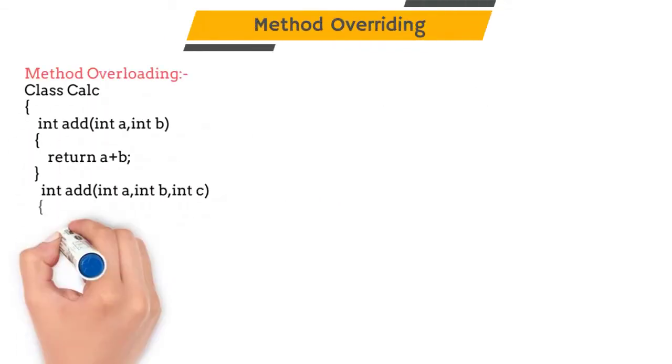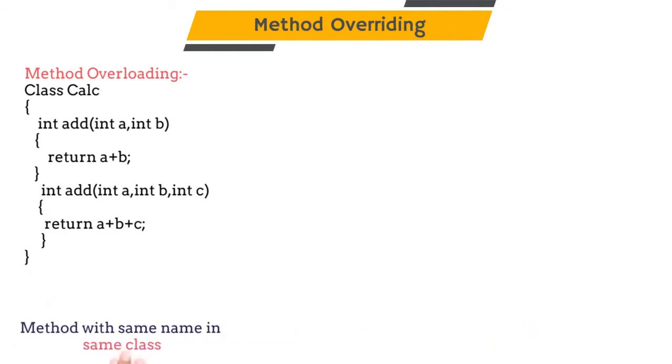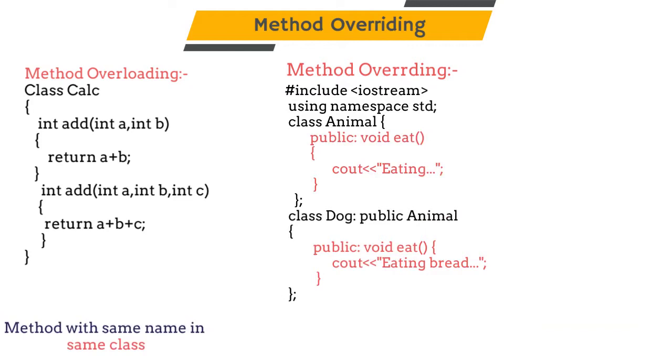We have learned that method overloading means creating two or more functions with the same name in the same class. But if we are creating two or more methods with the same name in parent and child class, that is in two different classes, then it is called method overriding.